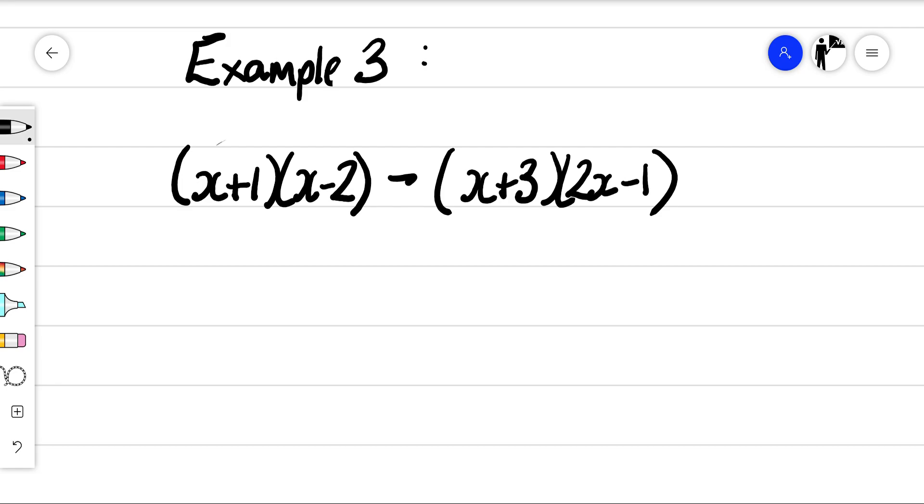Same sort of idea again. If we had a problem with this in the past, 2 times 3 subtract 4 times 2, we would multiply each term individually, and then we would subtract them at the end. So we're going to do that to start off with.